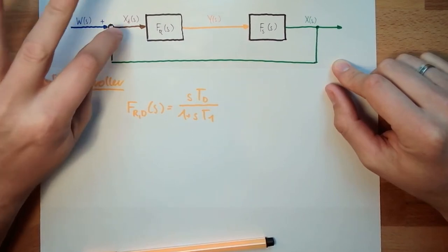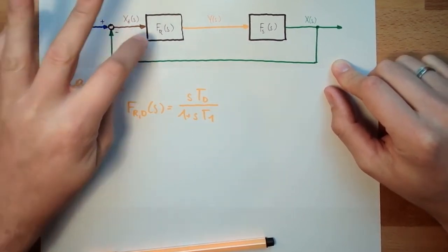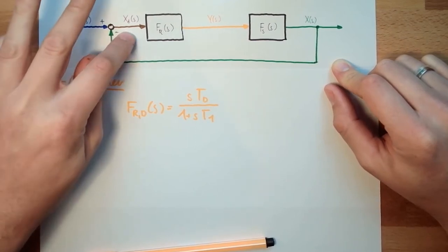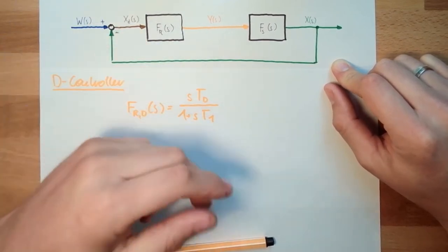Only in case this is changing, there is some output. If this is not changing, a constant, the D-controller does not even care.